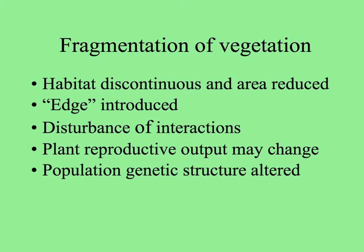Since plants are the basis of communities, let's consider first the effects of fragmentation on the plants in that habitat. In each fragment, the area is reduced, and there's a lot more edge introduced into the expanse of that habitat across the landscape. So the interactions that the plants are involved in with each other and with their mutualists are disturbed, as are their interactions with their enemies.